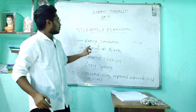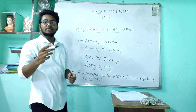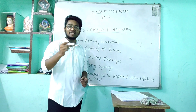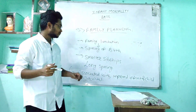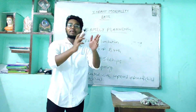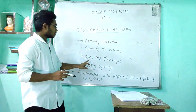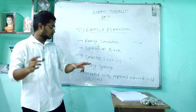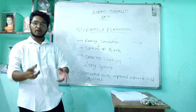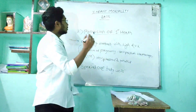Another preventable measure is family planning — family limitation and spacing of births. Family limitation means having at most three children, and birth spacing means at least three years between each child. Smaller family size and longer birth spacing are associated with improvement of infant and child survival.